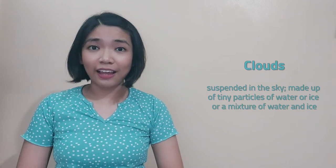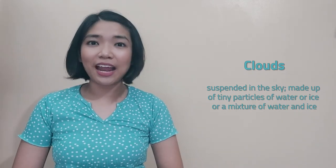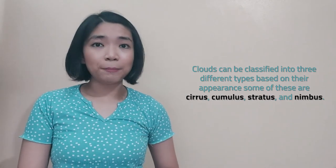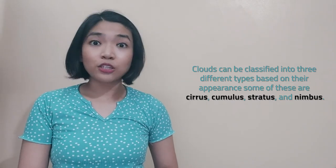Another factor that affects the weather is the presence of clouds. Clouds are suspended in the sky and are made up of tiny particles of water or ice, or a mixture of water and ice. Clouds can be classified into three different types based on their appearance: cirrus, cumulus, stratus, and nimbus. Two instruments can be used to measure the height of the clouds from the ground — the ceiling light projector and ceiling balloon.